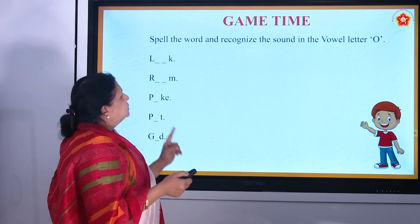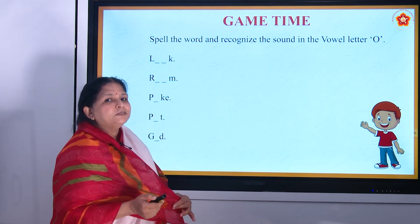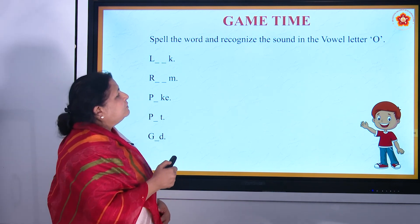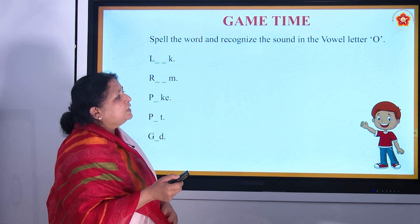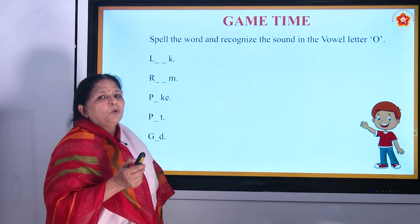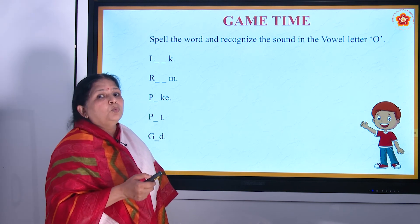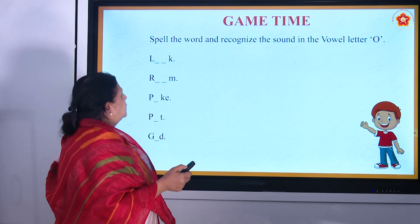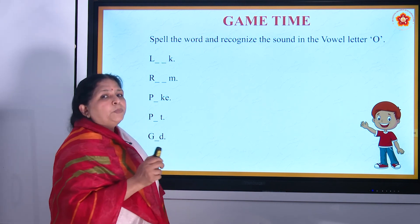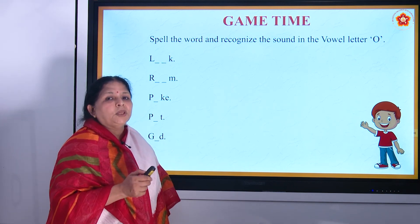Now it's game time again — very favourite for all of us! I too enjoy when you all are playing games. Spell the word and recognize the sound in the vowel letter O. The first is 'oo' — l-o-o-k — look. Then room — r-o-o-m — room. Then o — p-o-k-e — poke. Then p-o-t — pot. Then g-o-d — god.